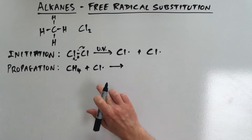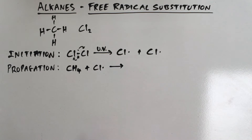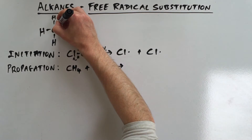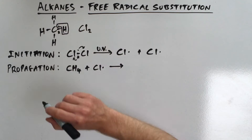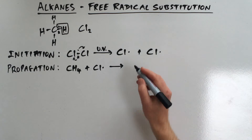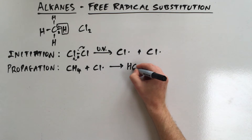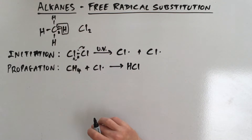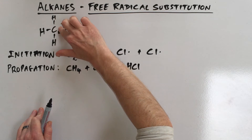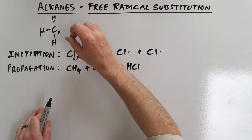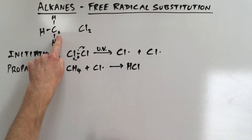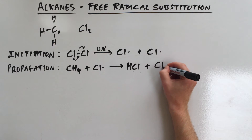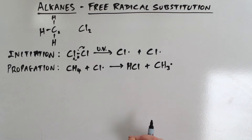What the chlorine free radical does is take one of the hydrogens and one of the electrons involved in the bond it has with the carbon. So we end up with HCl — it takes a hydrogen and one of the electrons. What's left over is CH₃, which itself has an unpaired electron. So what we've actually formed as part of this process is a CH₃ radical — a methyl free radical.